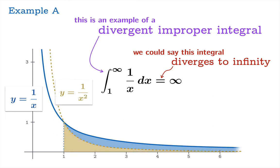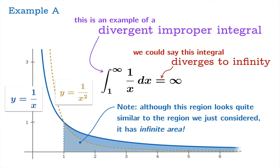If we overlay the graph of 1 over x squared, the regions we're looking at are qualitatively quite similar. Although the regions do look similar, this new region — under 1 over x — actually has infinite area. So somehow the region under 1 over x squared has area equal to 1, while the region under 1 over x has infinite area. This might be surprising, but it's the sort of thing you need to get used to with improper integrals — don't get fooled by the looks of things.